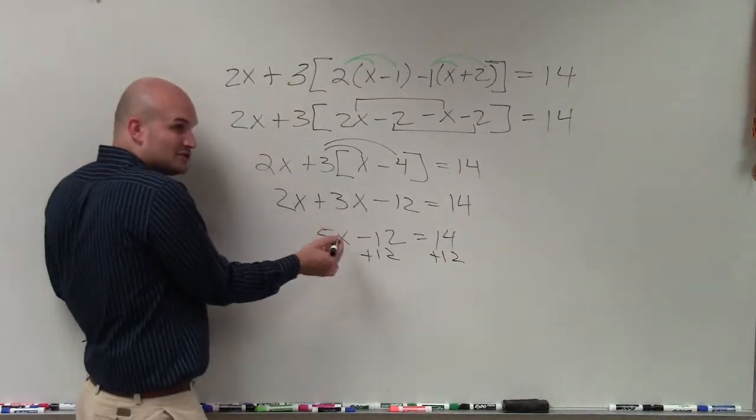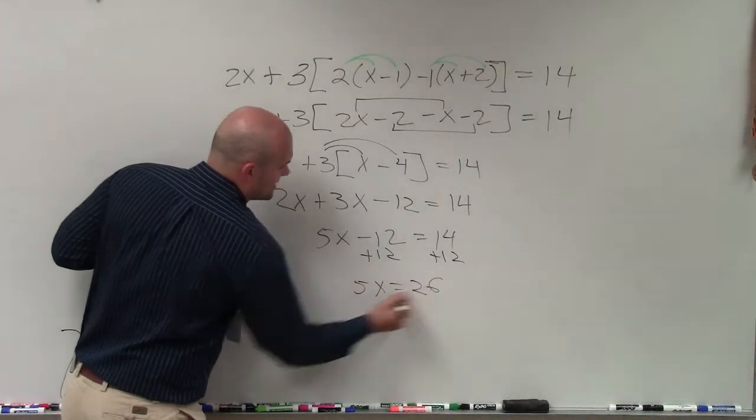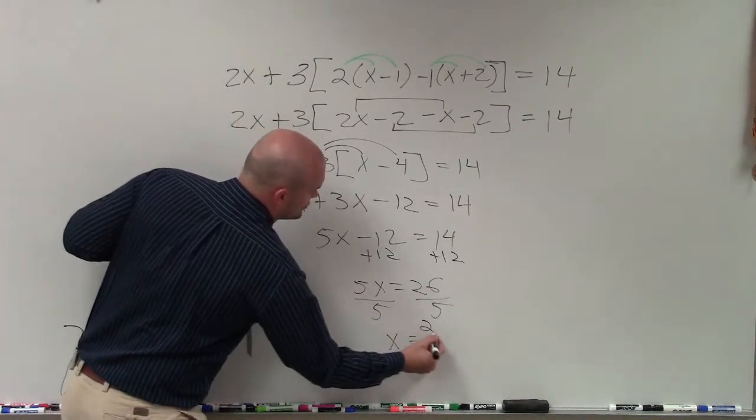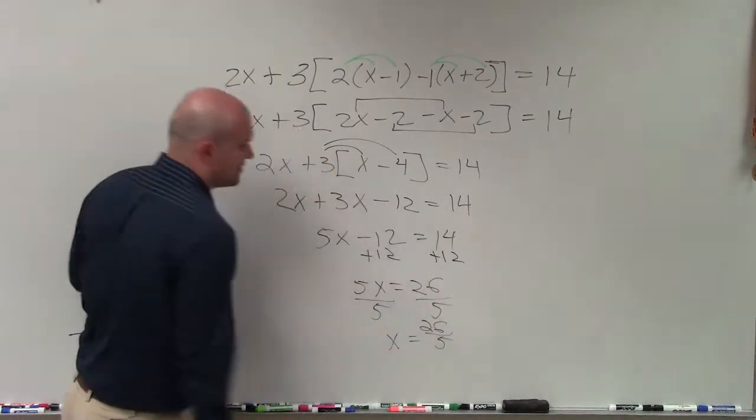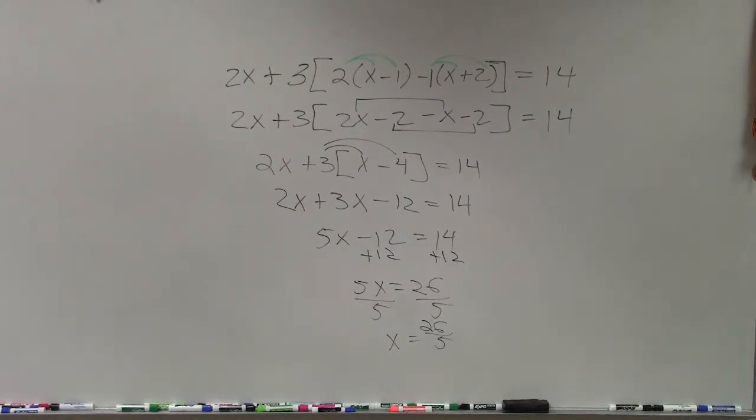And you guys should be happy. Once you get it to a 2-step, you say, oh, I know how to solve now. 5x equals 26, divide by 5, divide by 5. x equals 26 over 5. We'll leave it as a fraction. OK? Make sense? Any questions? Preguntas?